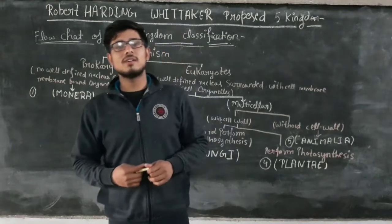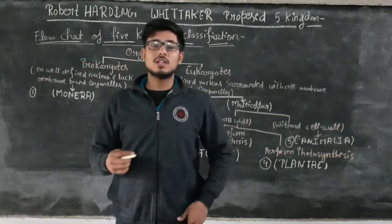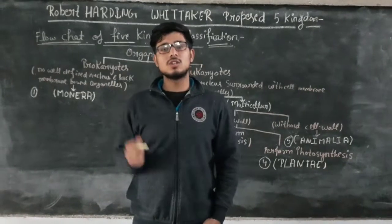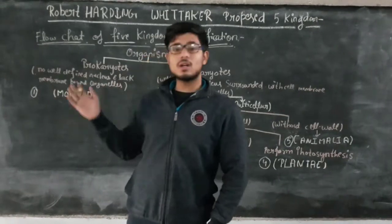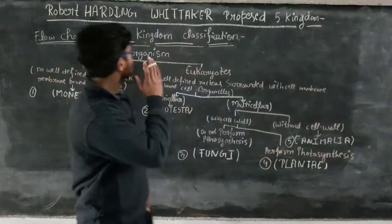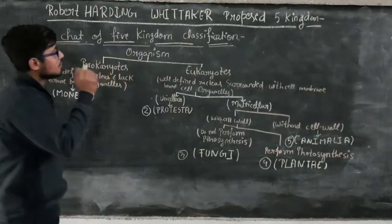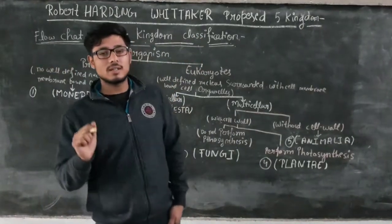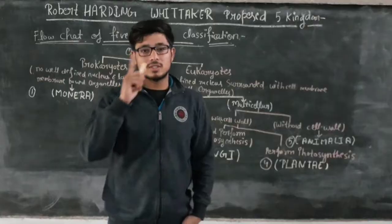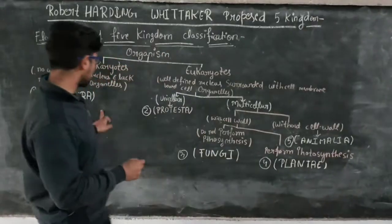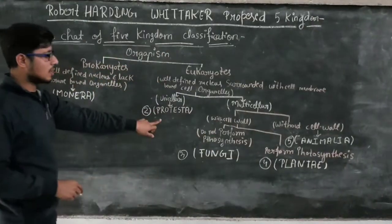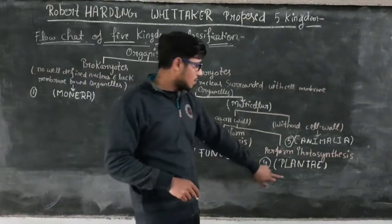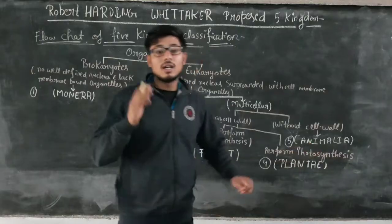Hello guys, this is Vajshar Amaya. Welcome to my YouTube channel. We are going to start with our first video on the topic of Five Kingdom Classification. The first kingdom is called Monera, second is Protista, third is Plantae, and one is Plant and the last one is Animalia.